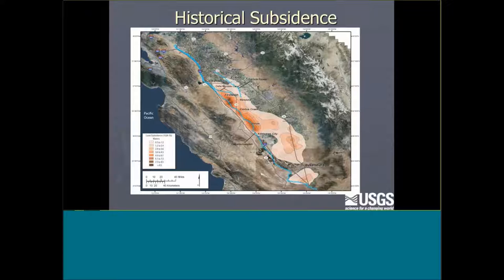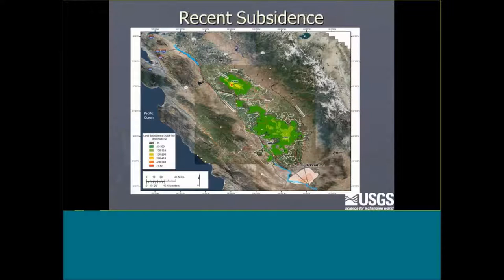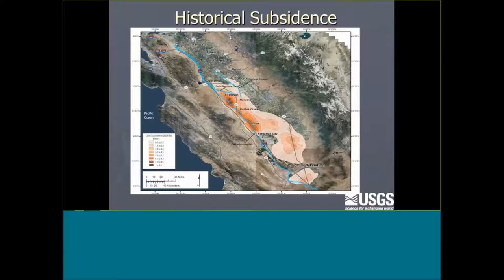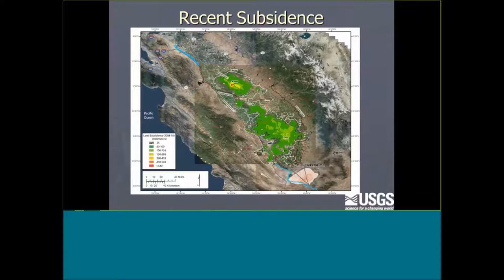Overall, this shows historical subsidence on the west side versus where we're seeing it now — a huge affected area. We know that most compaction occurs below the Corcoran clay. The San Joaquin Valley is an assemblage of sand, gravel, and a lot of clay. More water is pumped from beneath the Corcoran clay because the water quality is better.